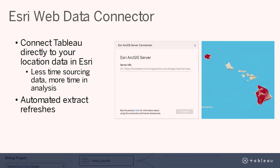You can now connect Tableau directly to your location data in Esri by simply entering an ArcGIS server URL or GeoService API URL. Automated extract refreshes ensure the visualizations are always up to date and enable you to spend less time sourcing data and more time in analysis.